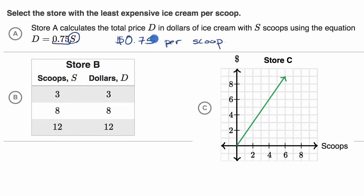And anything like this, when you're comparing, you want to put it all in the same terms. Here it's 75 cents per scoop. Let's think about how much per scoop it is at B and how much per scoop it is for C.